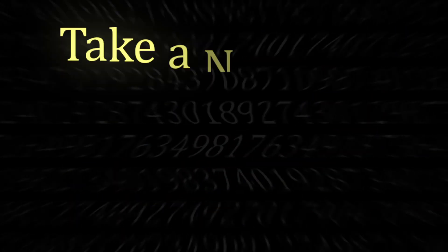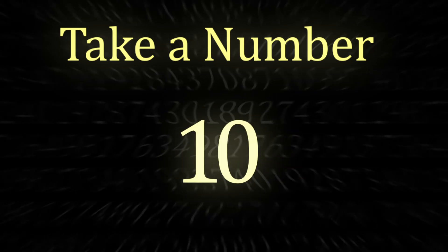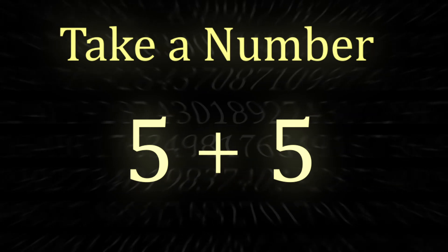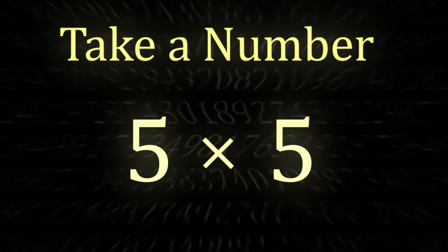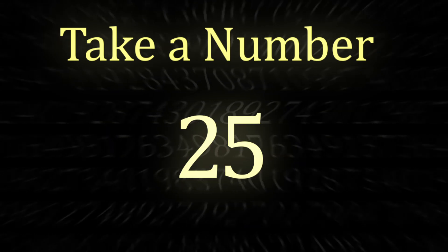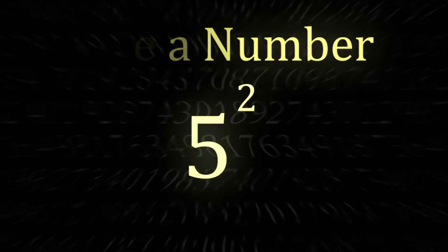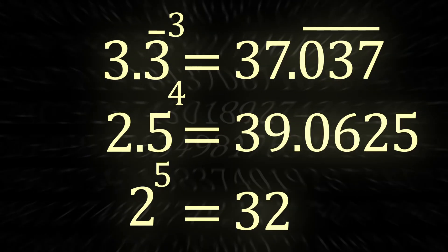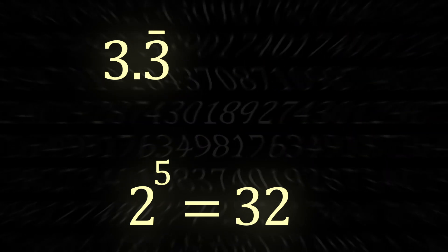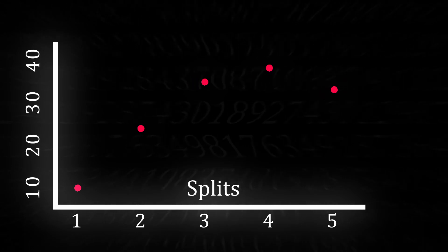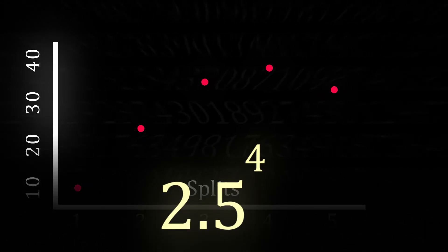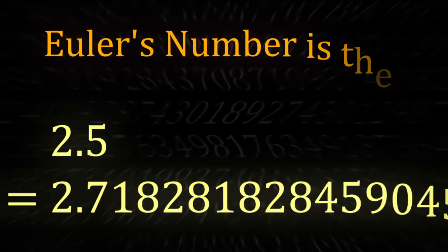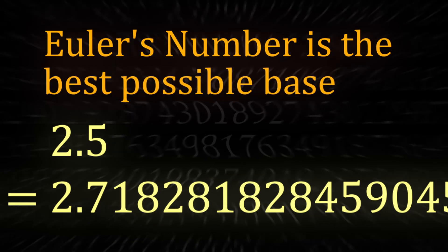Let's take a number — for demonstration we'll use 10. Ten can be split into two equal parts of 5, but instead of adding the two 5s, let's multiply them. This equals 25, or 5 to the power of 2. We can split this even further into 3, 4, and 5 parts. The value peaked at 4 splits, or 2.5 to the power of 4, after which it started to decline. This is also the base closest to Euler's number — 2.718.